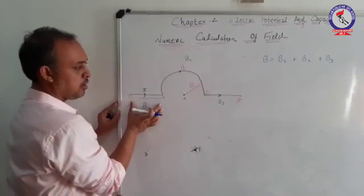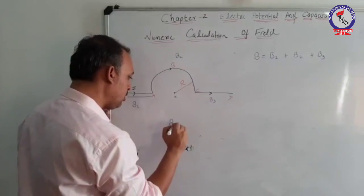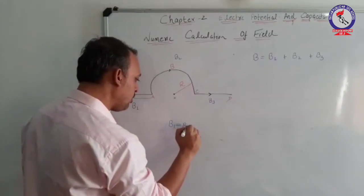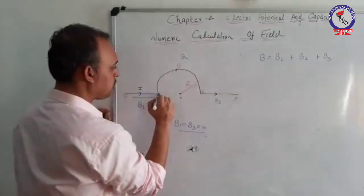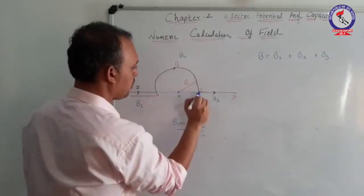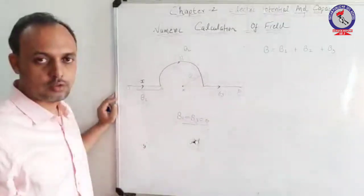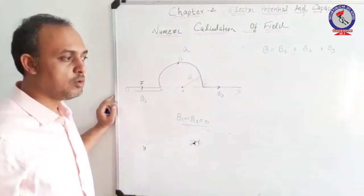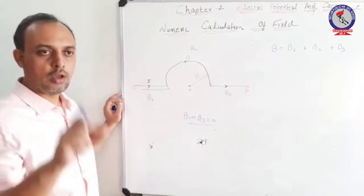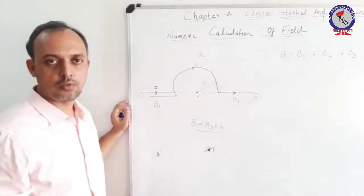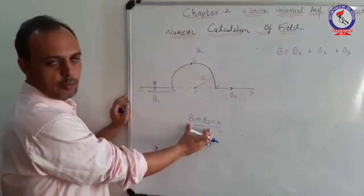If you observe the conductor B1 and B3, you will observe that magnetic field due to B1 and B3 is zero. How? If you extend this conductor, you will observe that this point x is lying on the surface of the straight conductor. And due to the concept of Biot-Savart's law, we have already studied that any point on the surface of the conductor is always zero, which implies that B1 and B3 will become zero.